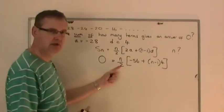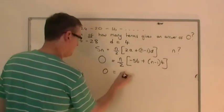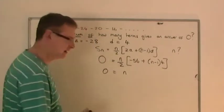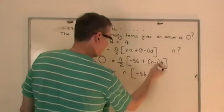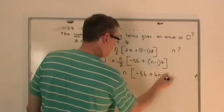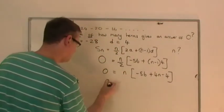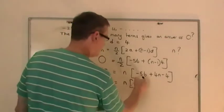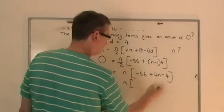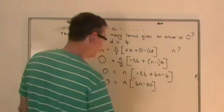Well, I'd get rid of this 2 here by doubling both sides. So if you double nothing, that's still nothing. So you get n, so you get minus 56. Expand that out, you get plus 4n minus 4. So we get nothing equals n, bracket, minus 56 minus 4 is minus 60. So you get 4n minus 60.